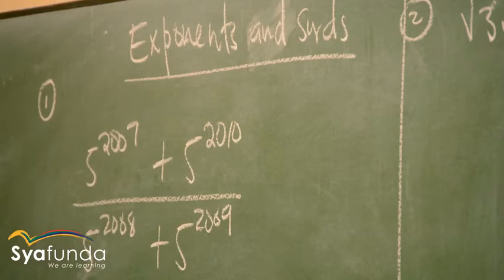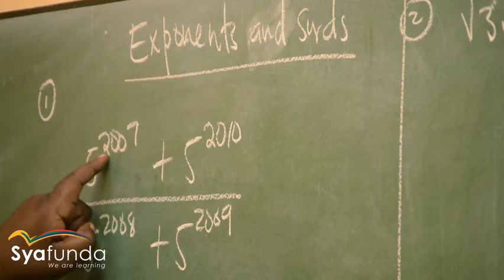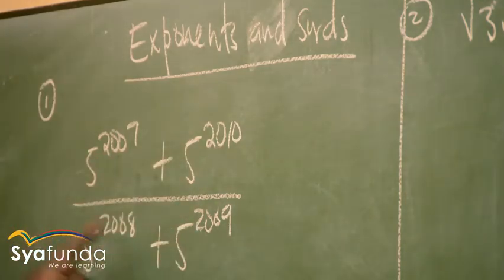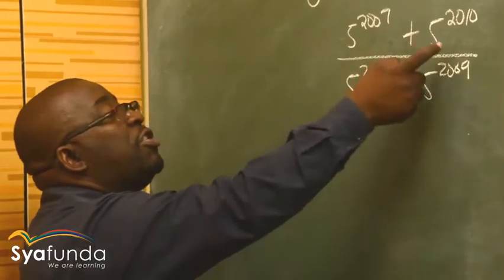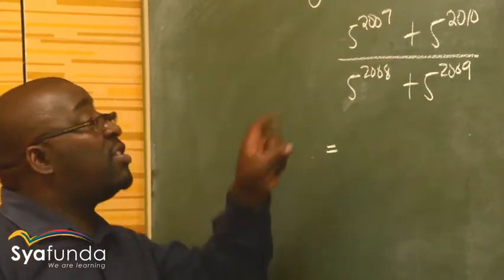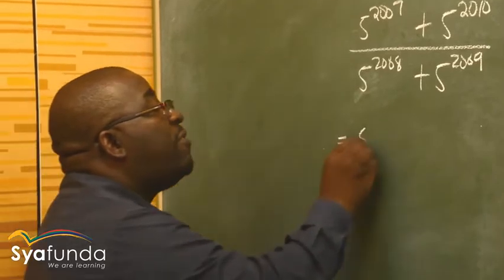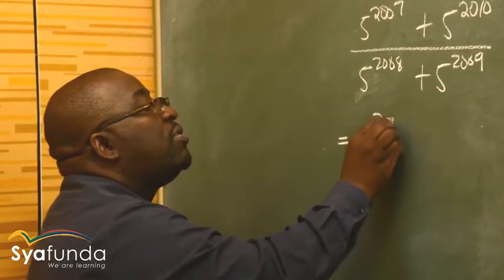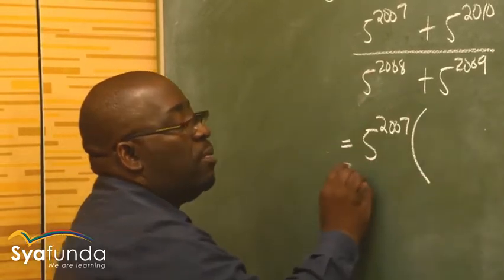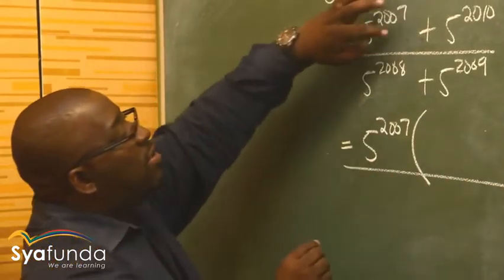You try and look at the smallest number of the exponent. This is 2007, this is 2010, 2008, 2009. So the smallest, which will appear in all of them, will be 2007. So 2007 becomes our common factor. You treat the numerator on its own as well as the denominator, remembering that the smallest is 2007. So if I take 5 to the power of 2007 as the common factor in my numerator, if I take this one out...